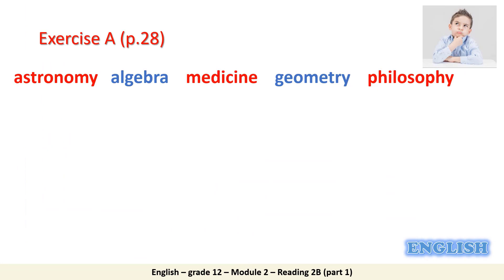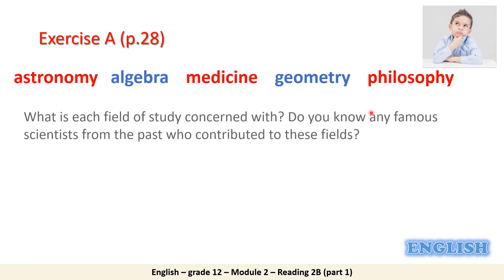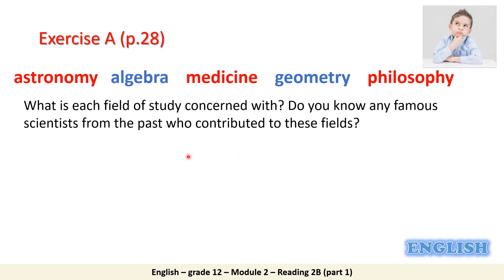Now it's time to open our books. This is Exercise A, page 28. We've got different fields of study: Astronomy, Algebra, Medicine, Geometry, and Philosophy. What I want you to do is tell me what each of these fields is about, and name some famous scientists from the past who added to these fields.